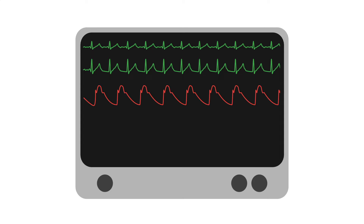Just underneath is a red line. This is an arterial waveform coming from the patient's arterial line, measuring systemic blood pressure.